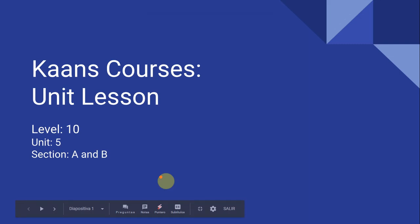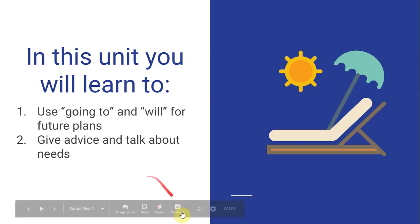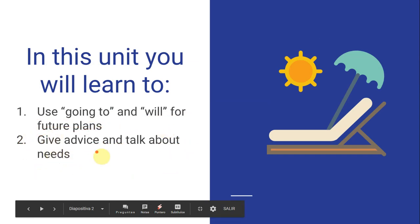Hi guys, welcome to level number 10 of this pre-intermediate course. We're going to be focusing on unit number five — this is lesson number one. In this first lesson we're going to be describing in general terms both topics from the unit: using going to and will for future plans, and giving advice and talking about needs.